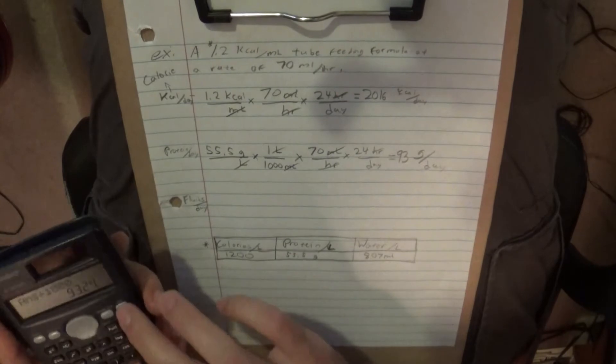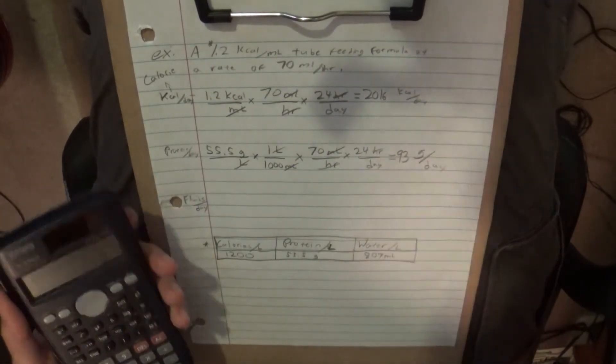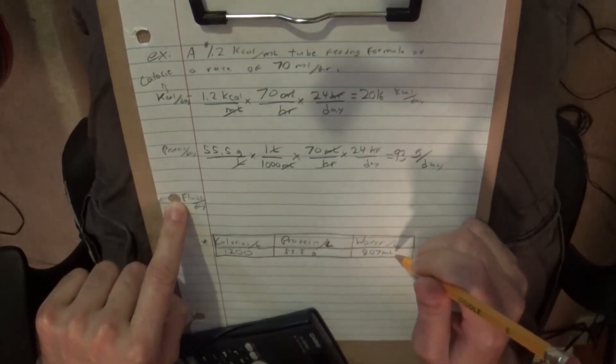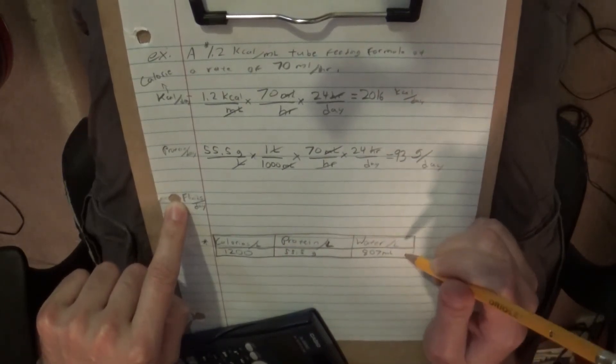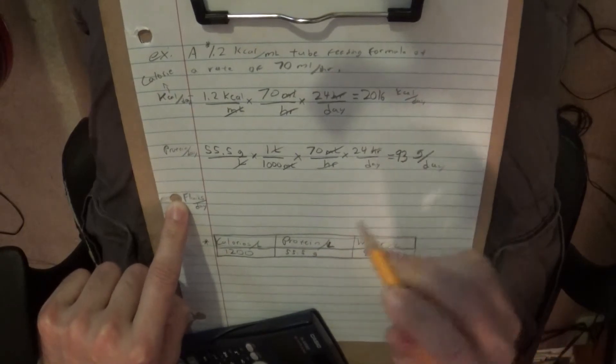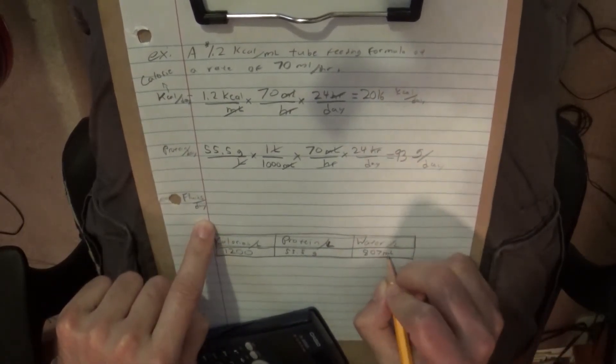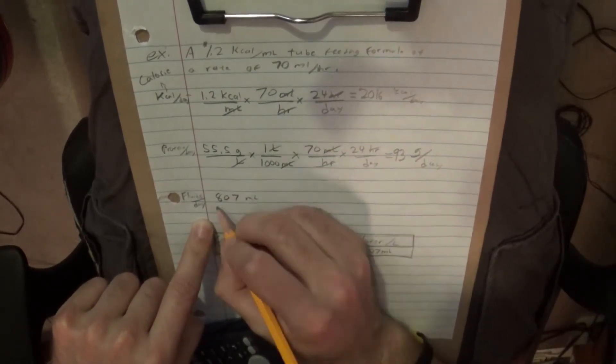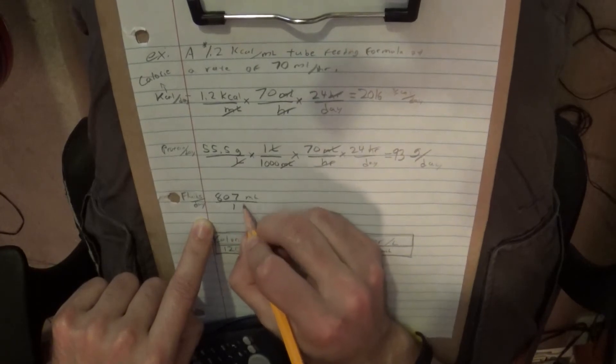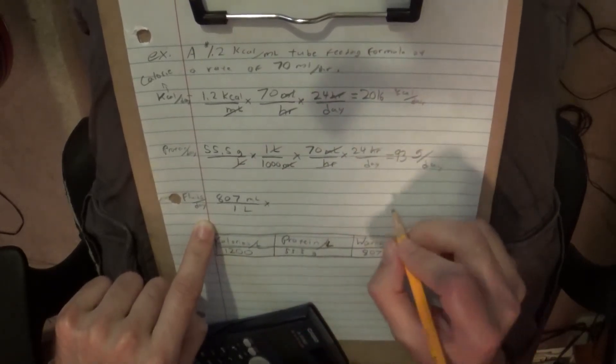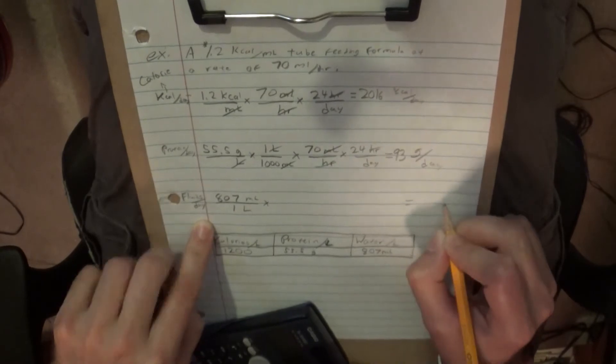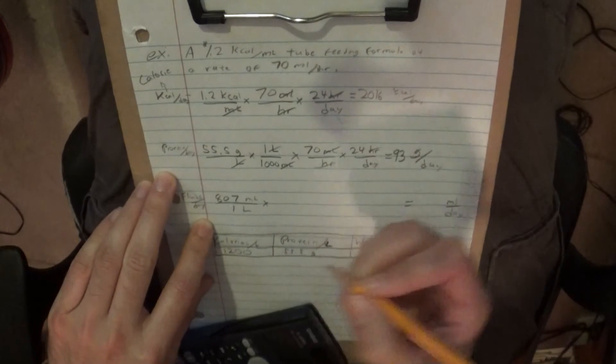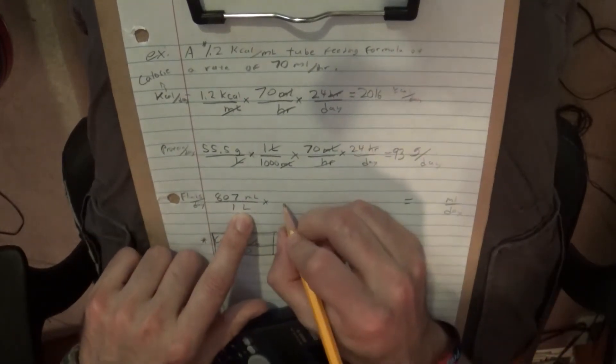Now, fluids are a little trickier the way I do it with this equation. What do we want to have? Of course we want, it's going to be milliliters per day. So what we have is milliliters per liter so far. So we have 807 milliliters per liter of solution. The answer is going to be milliliters over days. So, we've got to get rid of the liters, right?